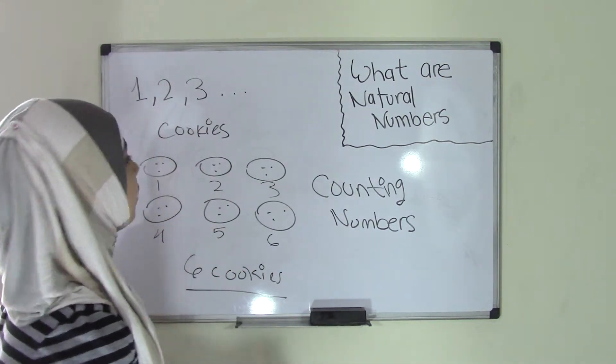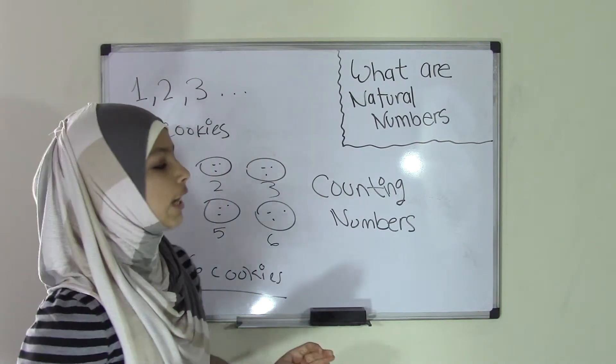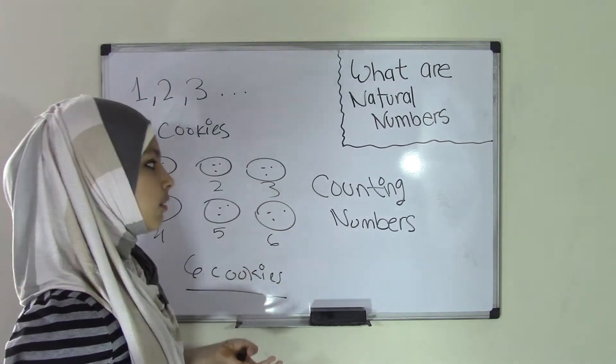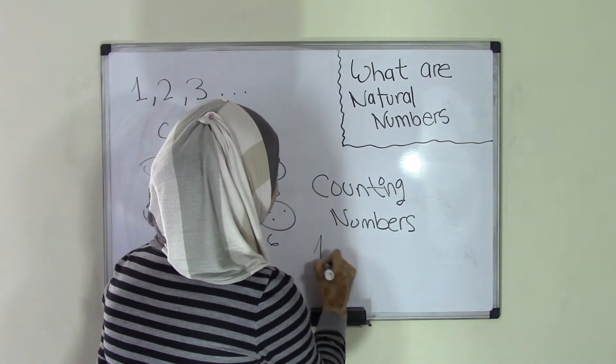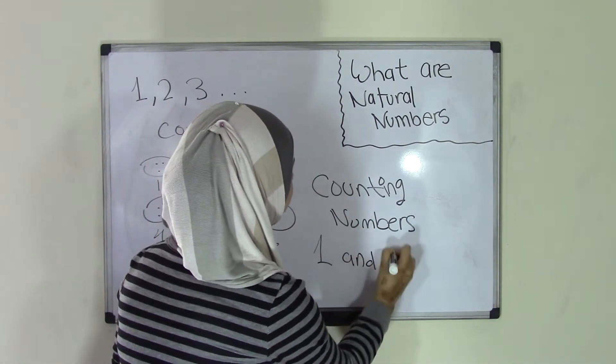So you always have to start with 1. So that's pretty much like the rule for natural numbers, which can also be counted as counting numbers, right?